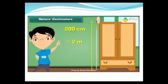What is the length of this cupboard? The length of this cupboard is 200 centimeters. As you know, 1 meter is equal to 100 centimeters. So we can write: 200 centimeters is equal to 2 meters.